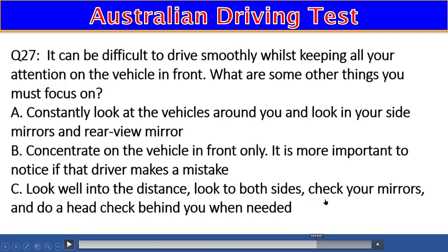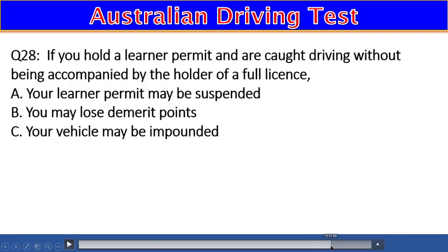Question 28: If you hold a learner permit and are caught driving without being accompanied by the holder of a full license: A) Your learner permit may be suspended, B) You may lose demerit points, C) Your vehicle may be impounded. The right answer is A — your learner permit may be suspended.